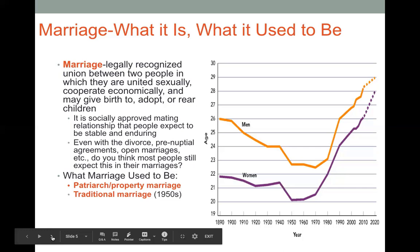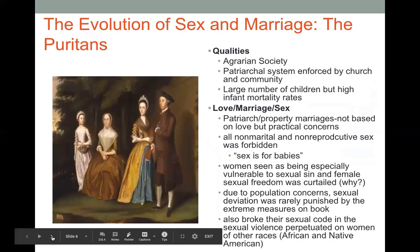That was the normative model of marriage for a long period of time until it started to change a little in the 1920s, and those changes were fully ushered in with the concept of traditional marriage, which you can associate with the 1940s and 1950s. We will talk about both of these concepts in more detail as we go over our history, beginning with the Puritans.